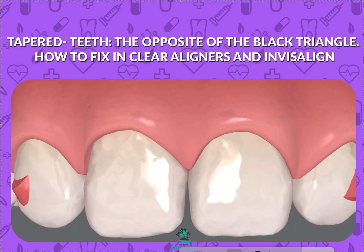We look at the ClinCheck and think: is that a space? It's not a black triangle — black triangles are up here. I call these 'tapered teeth.' Sometimes we have square shaped teeth, sometimes tapered teeth, sometimes triangular shaped teeth. A black triangle is more like a triangular shaped tooth where the space is up top but touching down here. This is the opposite.